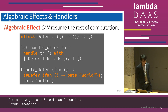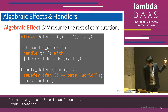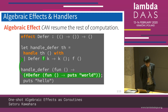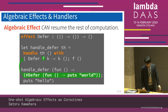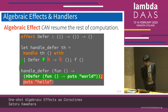In contrast, algebraic effects can resume the rest of computation. Here is a code with algebraic effects constructs. The first line, we declare the effect named 'defer' here, and the handler here. The green block is the effect invocation with a function as an argument. The red block is the rest of computation — in other words, the continuation.